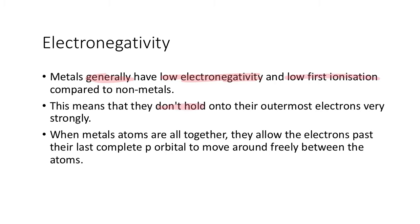This means that they don't hold onto their outermost electrons very well or very strongly. If they don't hold onto them, then what they're likely to do is actually lose them to other things. So when metal atoms are all together, they allow the electrons past their last complete p orbital to move around freely between atoms.